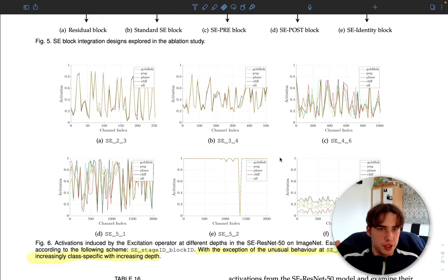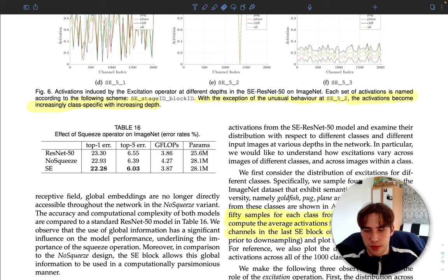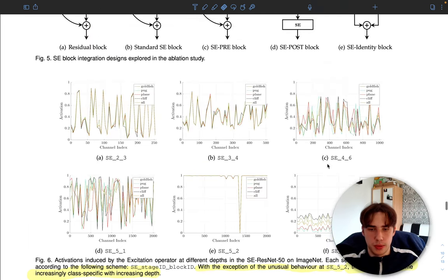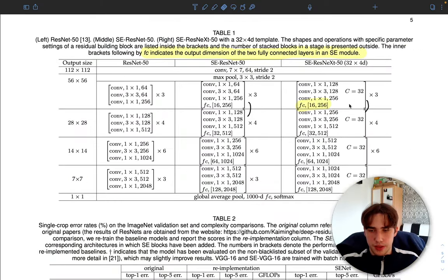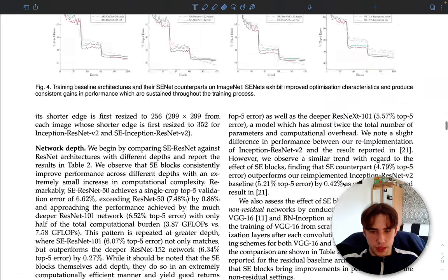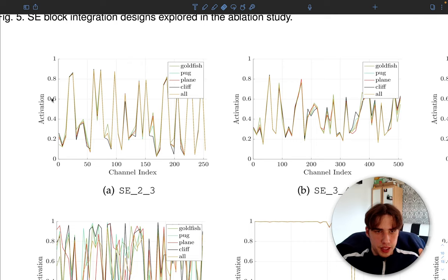Anyway, let's go to the actual results that they prove, what they state in the paper, and just basically confirm the main idea, the core idea of the paper. As you can see, they draw 50 samples for each class from the validation set and compute the average activation for 50 uniformly sampled channels in the last SE block of each stage. Each stage is basically each part of the network when you get multiple blocks.